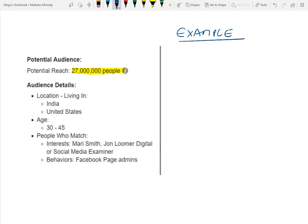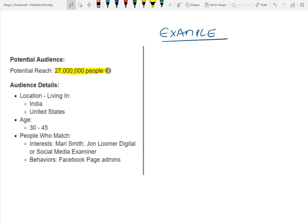Let's say we're selling a product and we're looking for people who are spending money on ads — they have a fan page and an ad account — because we want to sell a product to them. We think about three things. Number one, we want them to be fan page admins, because if someone's a fan page administrator, most likely they have an ad account and are spending money on Facebook.